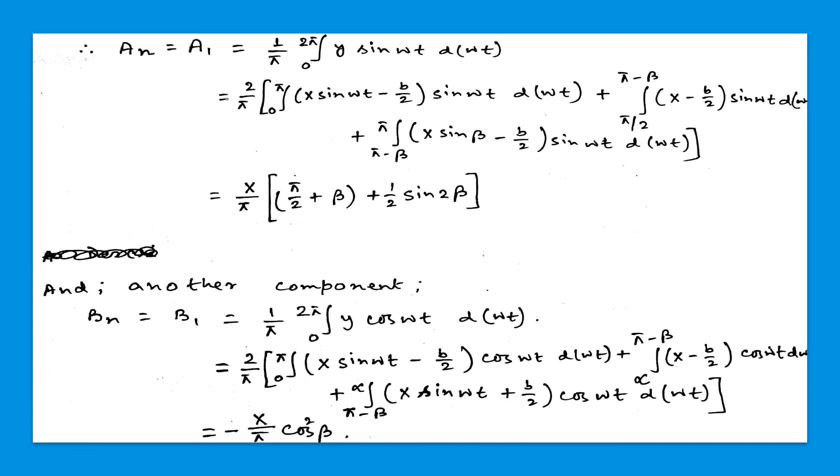So basically we consider this equation and we break the limit from 0 to π. And finally we get the value that is X divided by π into (π/2 plus β plus 1/2 sin(2β)).